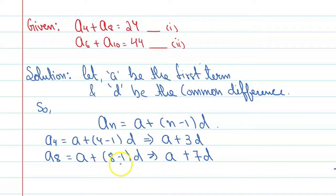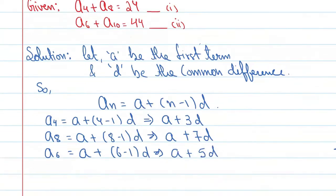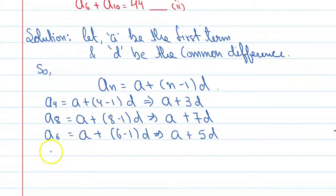Now, if you talk about A6 and A10 then that will be A6 is equal to A plus 6 minus 1 into d that is A plus 5d. And if you talk about A10 then you will get A10 is equal to A plus 10 minus 1 into D that is A plus 9d. Now, according to question which is given A4 plus A8 is equal to 24.